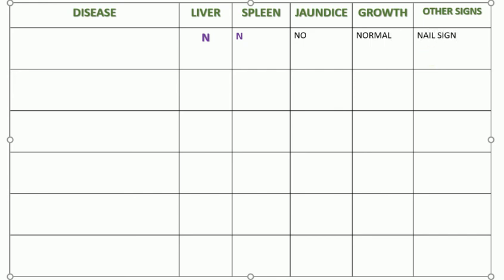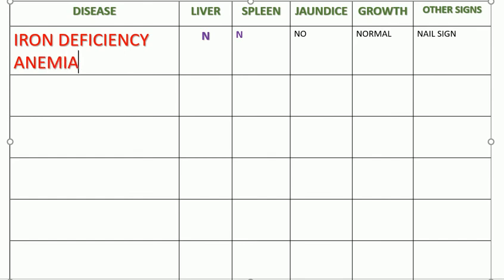Yes, you're right — it's iron deficiency anemia. How did you diagnose this? The liver was normal, the spleen was not palpable, there was no jaundice, the growth was normal, but you found nail signs like koilonychia. In kids you may not always find those signs — there might just be a reduced appetite.